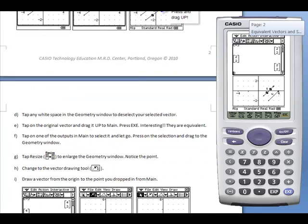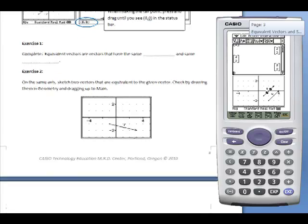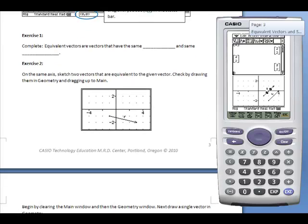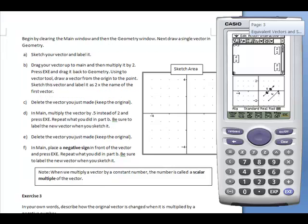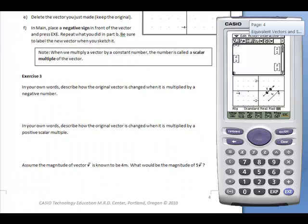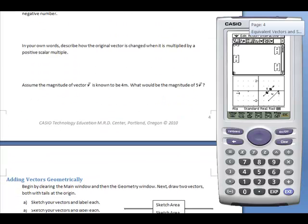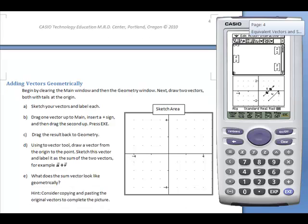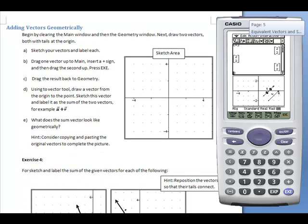The activity includes places for the student to sketch what they are seeing on the ClassPad to better understand the topic and express in their own words these different relationships. And then the activity ends asking the students to add and subtract vectors geometrically.